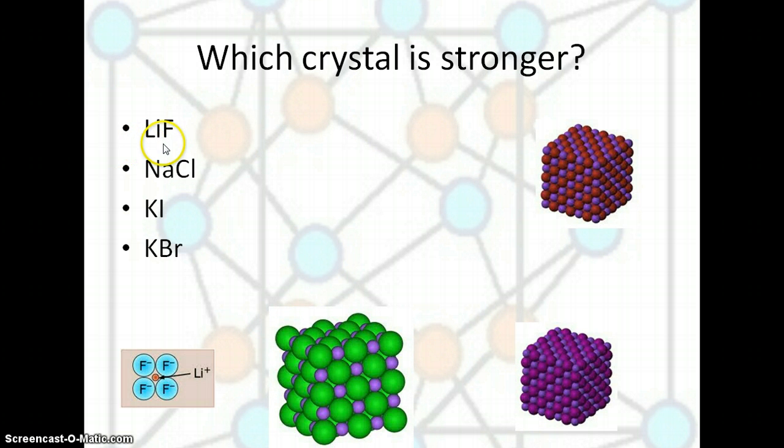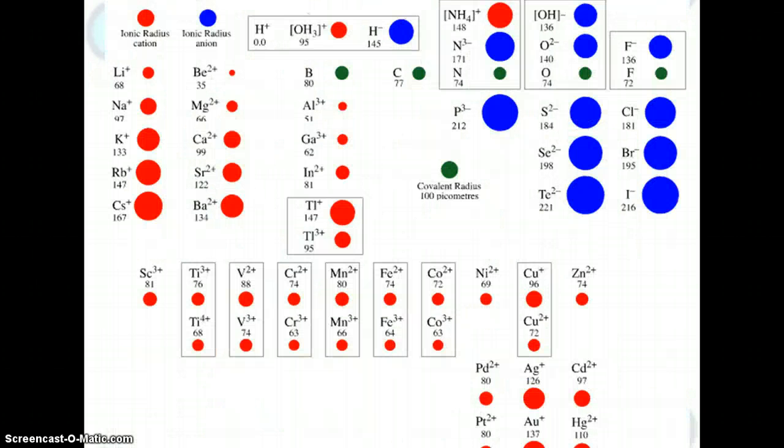What about these four? We have LiF, NaCl, KI, or KBr. Let's think about the differences between these. They're all 1 plus and 1 minuses, so it can't be the charge on these. Let's think about something else that could be different. Oh, the size. Just like the positive and negative, the size of the charge makes a difference, according to Coulomb's Law, so does the size of the ion.